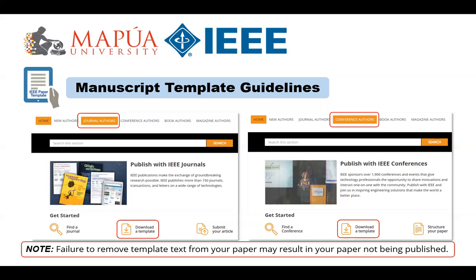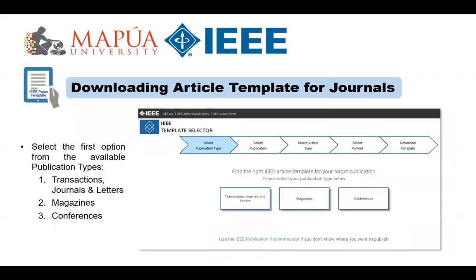I will be discussing a different approach for journals and conferences because it is a very different process. You can access the IEEE author center page to download the templates depending on which track you are about to pursue. To find the right IEEE article template — this is for journals — your target publication or each publication type has their own article template. Make sure you follow the succeeding steps to download the correct template for your selected journal.